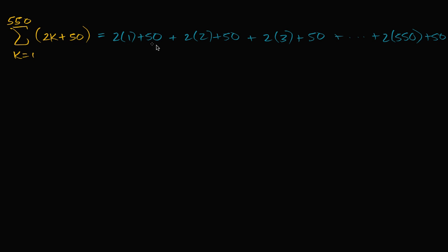So this first term evaluates to 52, plus the next term — two times two plus 50 is going to be 54 — plus the next term, two times three is six plus 50 is 56. And we're going to go all the way to our last term: two times 550 is 1100 plus 50, which is going to be 1150.